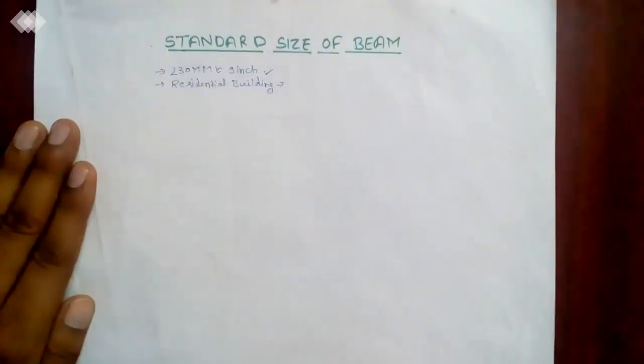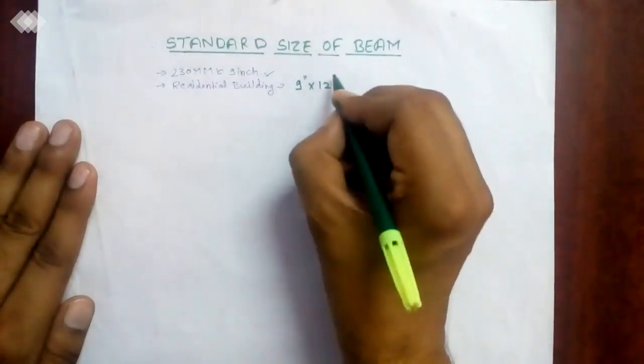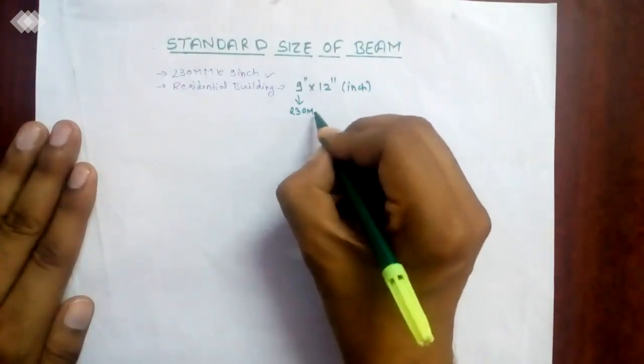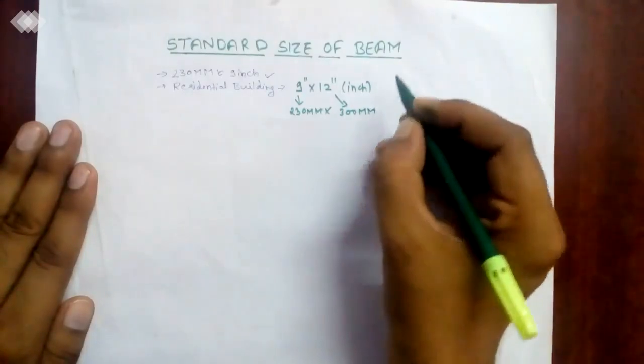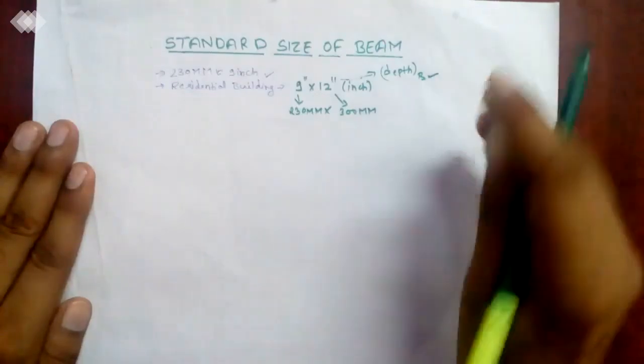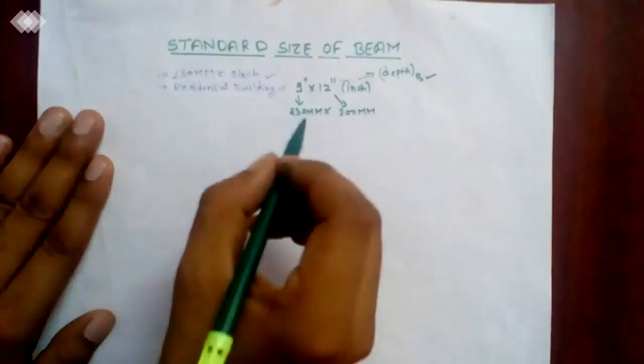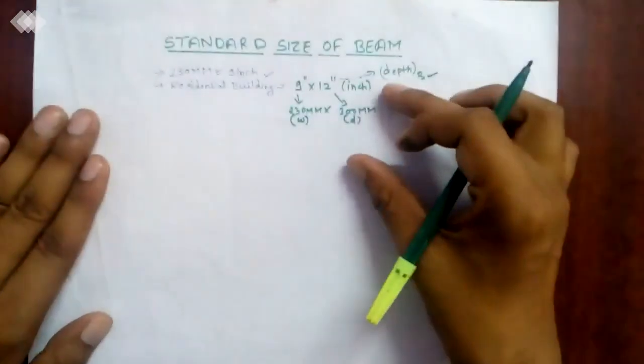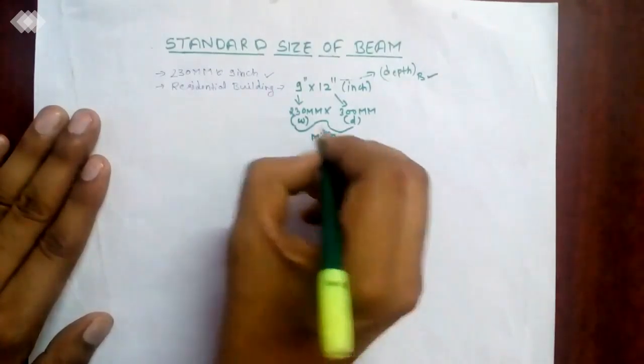What is the size we use? That is 9 inch by 12 inch. If you convert this in mm, that is the depth of beam we are taking. So if we are taking width as 230 and depth as 12 inches, this is the minimum criteria.